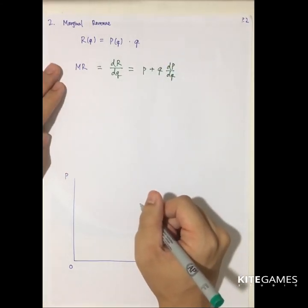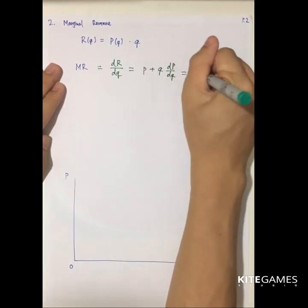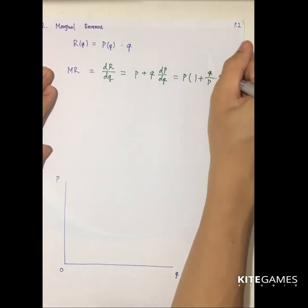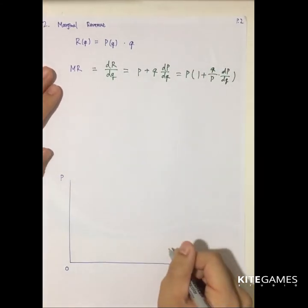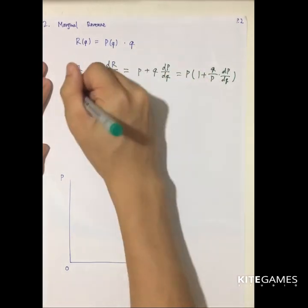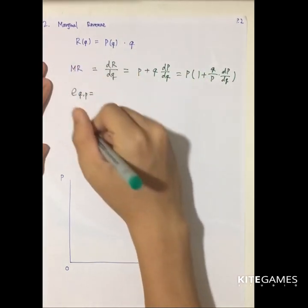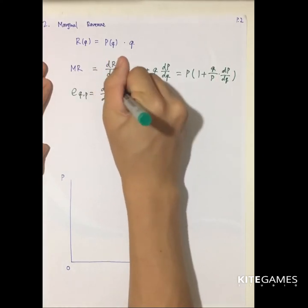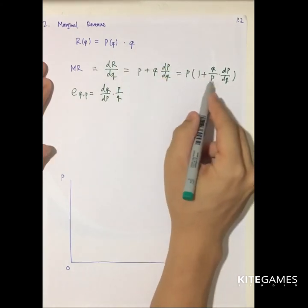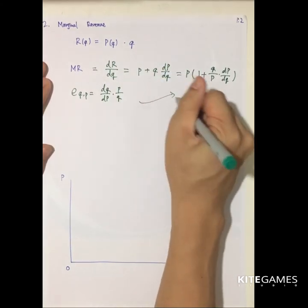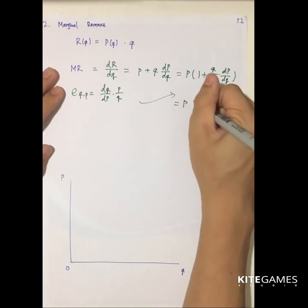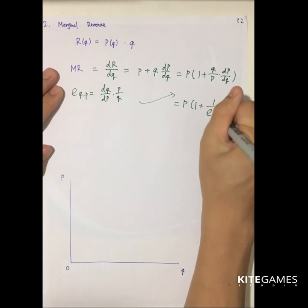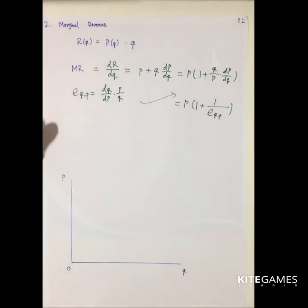Manipulating a little bit, this is equal to p times (1 plus q/p times dp/dQ). Recall that the price elasticity of demand is (dQ/dP) times (P/Q). So the term q/p times dp/dQ is just the inverse of the price elasticity of demand. Therefore, marginal revenue equals p times (1 plus 1 over e_QP), the price elasticity of demand.